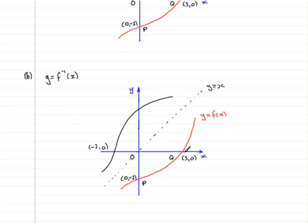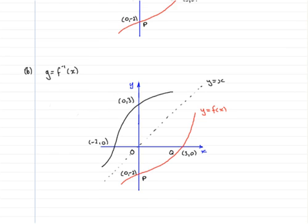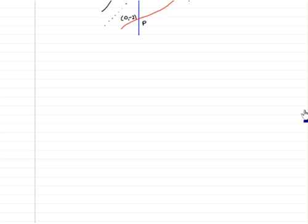And the point 3, 0 is going to be mapped to the point 0, 3. So just mark that in, 0, 3. And that's part B done. So let's just scroll up a little and get ready for part C.